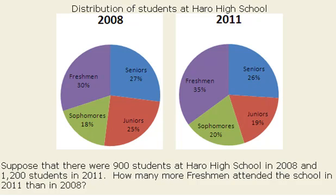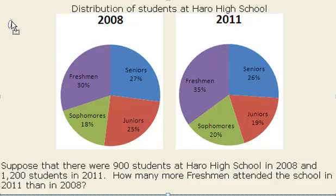In this data analysis problem, we are looking at two pie charts. The first pie chart is of 2008. The problem tells us 900 students attended Harrow High School in 2008, and 1,200 attended in 2011. So I'm just going to write those totals: 900 students in 2008 and 1,200 students in 2011.